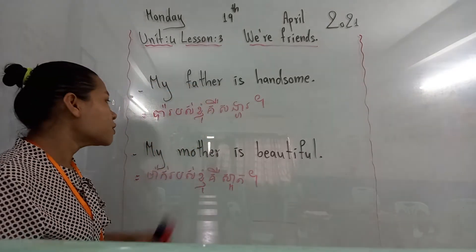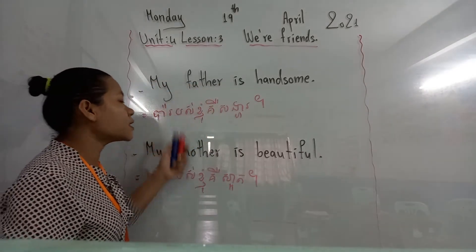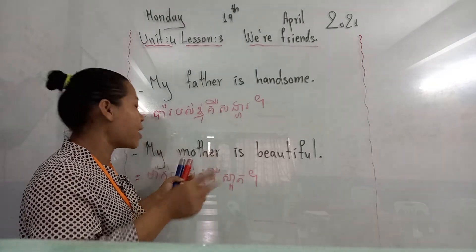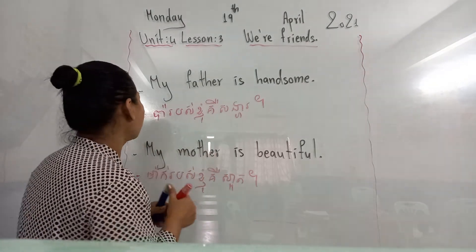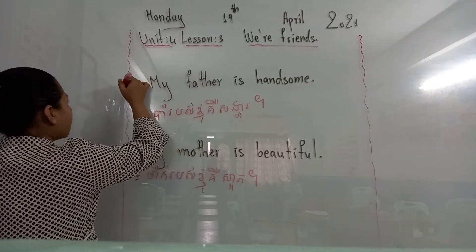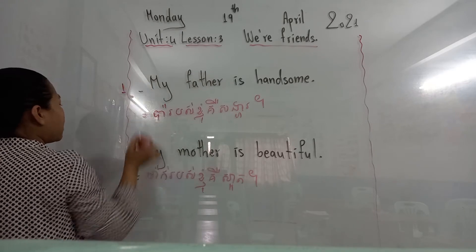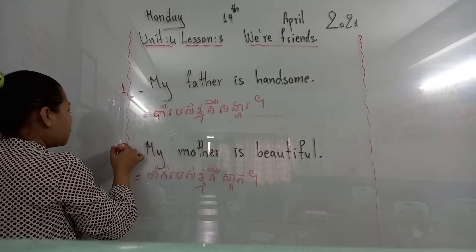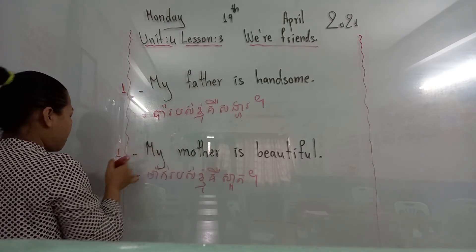So there are two sentences. Write two pages. My father is handsome — one page. My mother is beautiful — one page.